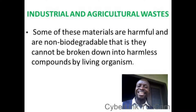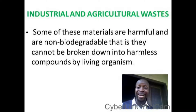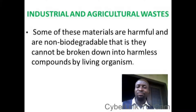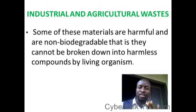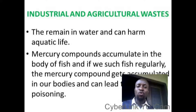Industrial and agricultural waste — some of these materials are harmful and non-biodegradable, meaning they cannot be broken down naturally or into harmless compounds by living organisms. They remain in water and can harm aquatic life. Mercury compounds accumulate in the body of fish, and if we eat such fish regularly, mercury compounds accumulate in our body and can lead to mercury poisoning.